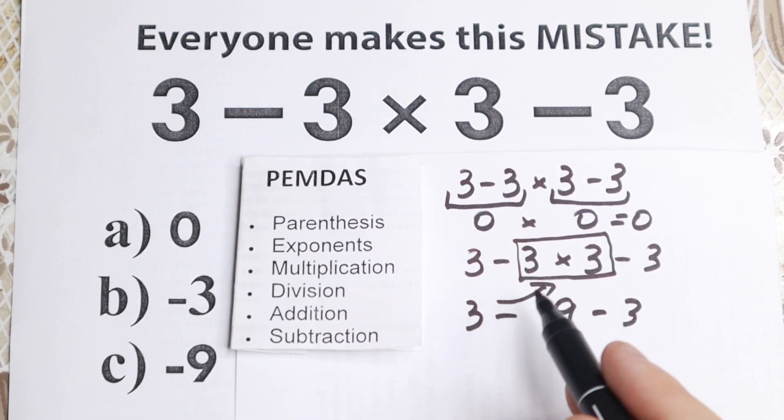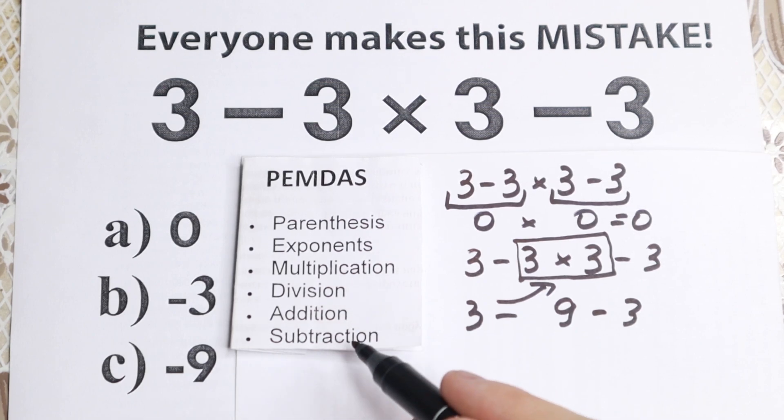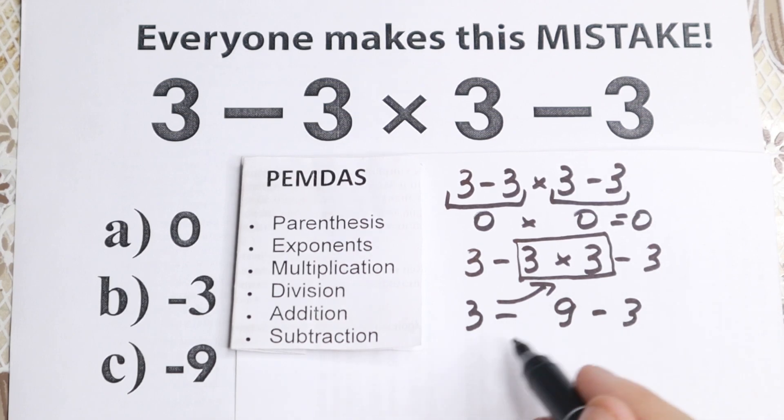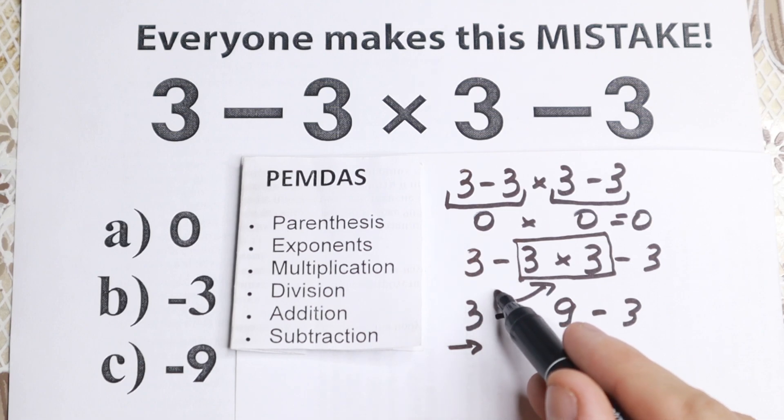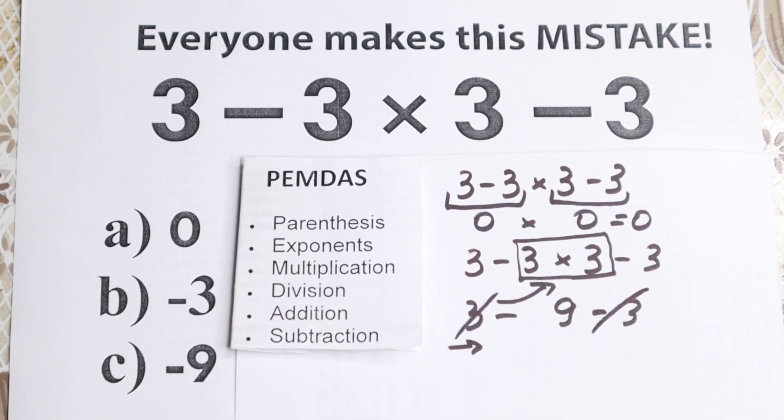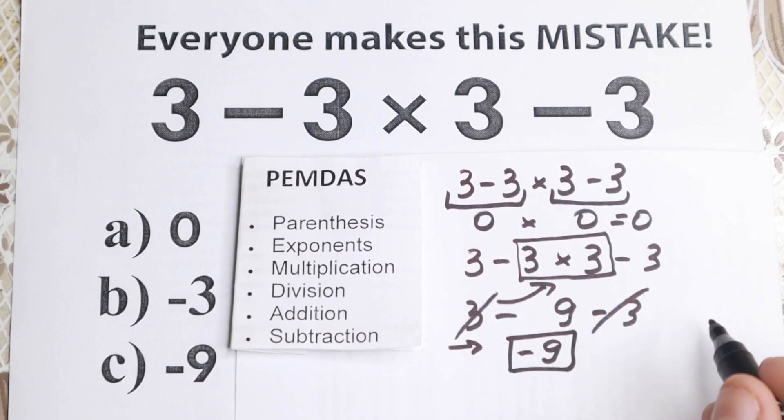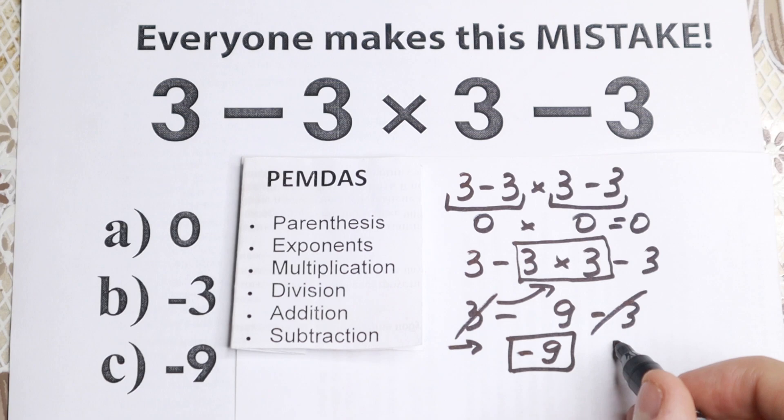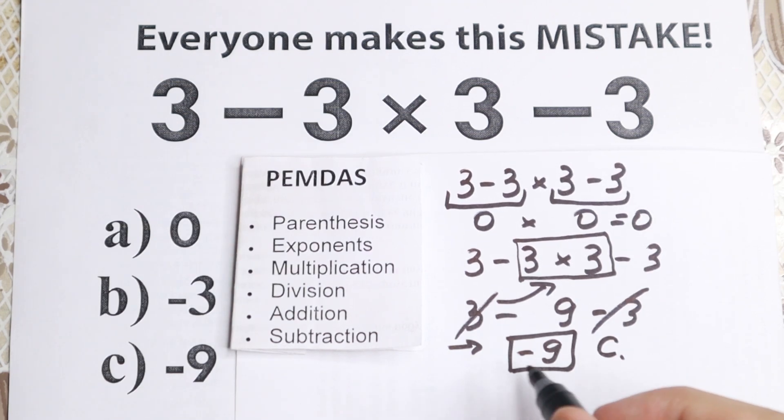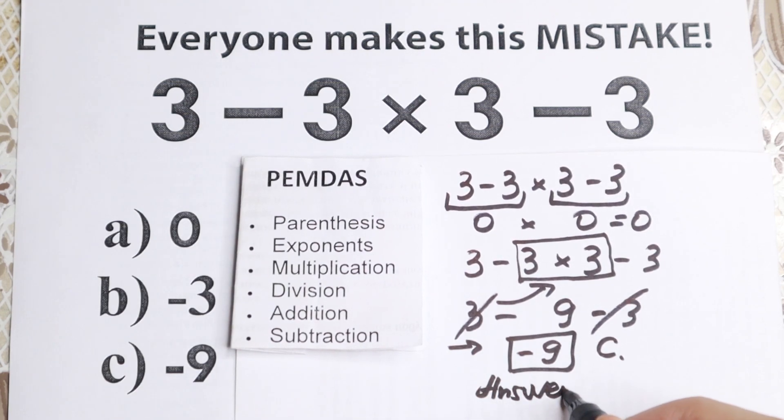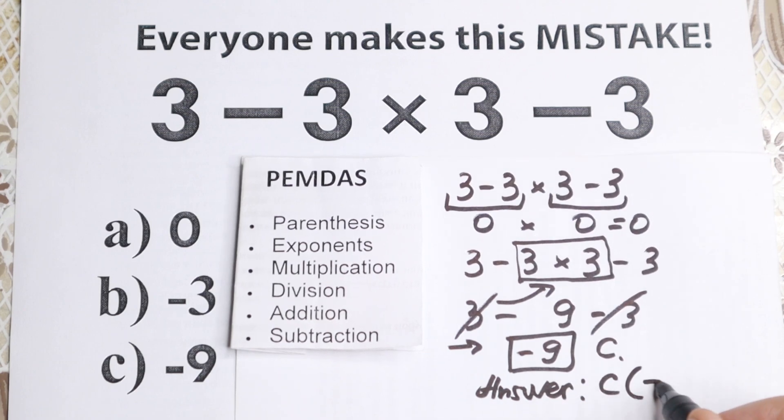We have subtraction, we don't have addition. This is one group. This is not like addition is before subtraction. If we're talking about order of operations, this is from left to right. This is classic pre-algebra concept, basic algebra. So we have 3 minus 9 minus 3. If you know a little bit about math, you can easily cancel this 3 and this minus 3. So the answer is minus 9. According to PEMDAS order, the correct answer is minus 9, option C.